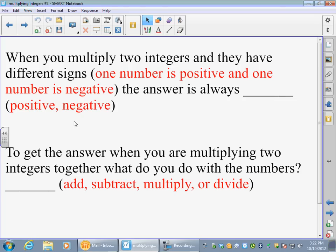We're going to multiply two integers and they have different signs, so one's positive and one's negative. What's the answer going to be, positive or negative? And then, what do I do to get the answer? Same questions I always look for.